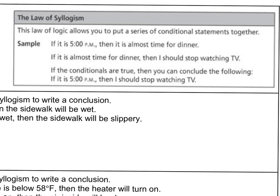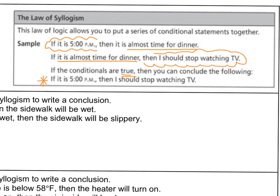Here's our final law using the law of syllogism — it has us using a series of conditional statements together. If it is 5 p.m., then it is almost time for dinner. If it is almost time for dinner, then I should stop watching TV. Notice the conclusion of the first conditional becomes the hypothesis for the second. If both conditionals are true, we can conclude: if it is 5 p.m., then I should stop watching TV. That third conditional eliminates the middle part.